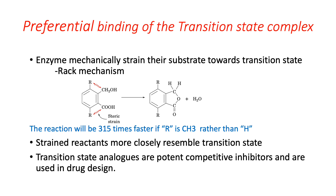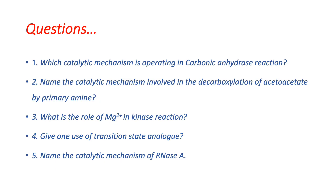Transition state analogues are potent competitive inhibitors and are widely used in drug design. Review questions from this class: Which catalytic mechanism operates in carbonic anhydrase? Name the catalytic mechanism in the decarboxylation of acetoacetate by primary amine. What is the role of magnesium ion in kinase reaction? Give one use of a transition state analogue. Name the catalytic mechanism of RNase A. Please submit answers in Google Classroom. Hope the points are clear — if you have any doubts please let me know. Thank you and stay safe.